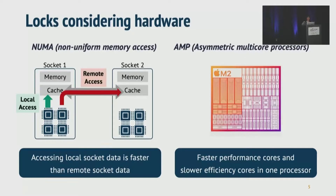AMP can be another example. Apple's M2 chip has four performance cores and four slower cores in one processor. When all eight cores are competing for a lock, to get better performance, developers may want to give faster cores more opportunities to grab a lock.